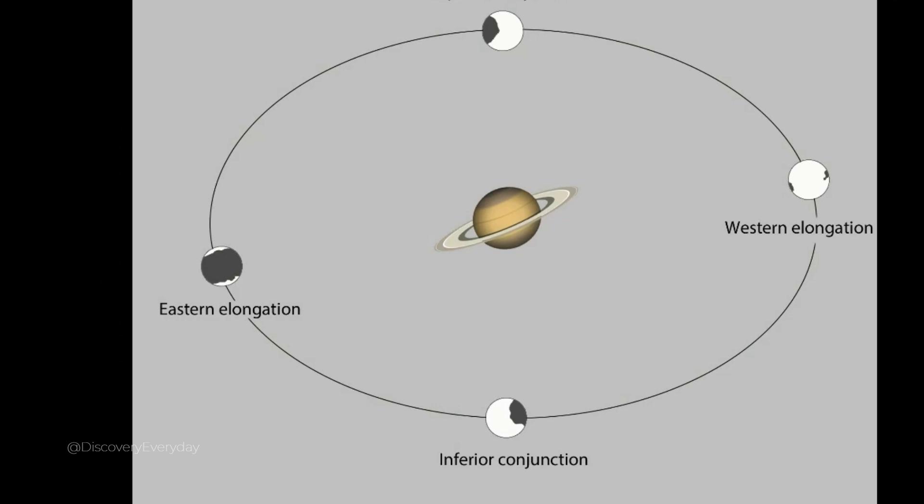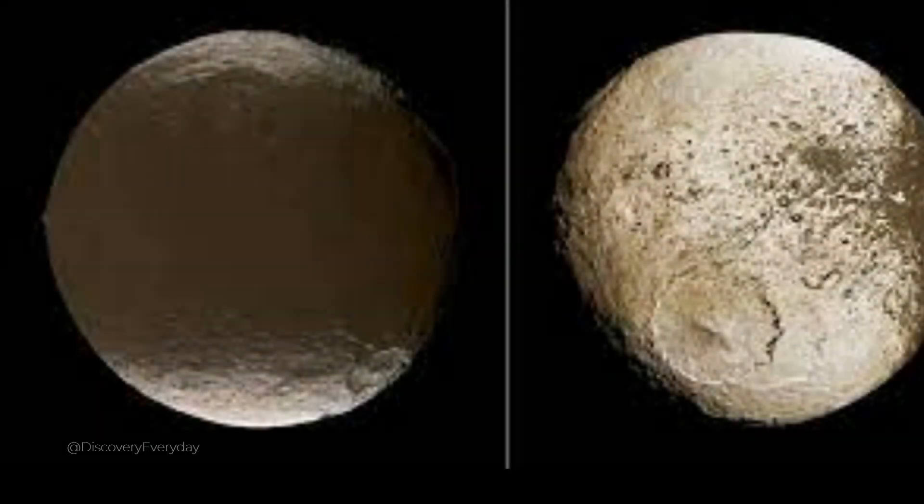It turns out that Iapetus is way outside of Saturn's rings, and because of this, it gets hit with a lot of space debris from objects that might be passing through its orbit, explaining the dark areas, according to Forbes.